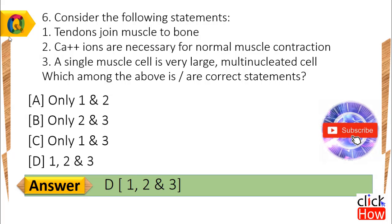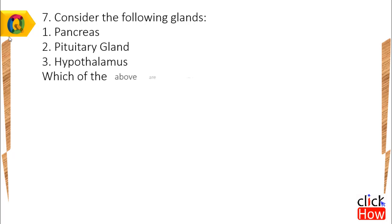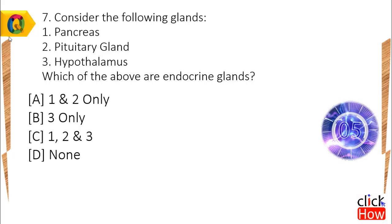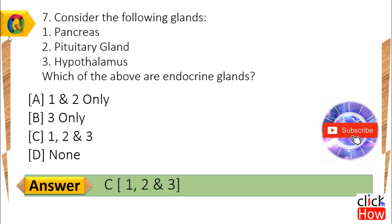Answer is D, 1, 2 & 3. Question 7: Consider the following glands: 1) Pancreas, 2) Pituitary gland, 3) Hypothalamus. Which of the above are endocrine glands? Option A) 1 & 2 only, B) 3 only, C) 1, 2 & 3, D) None. Answer is C, 1, 2 & 3.